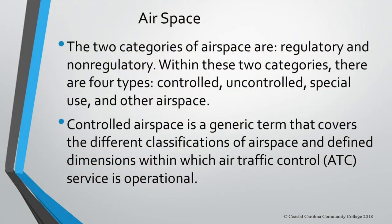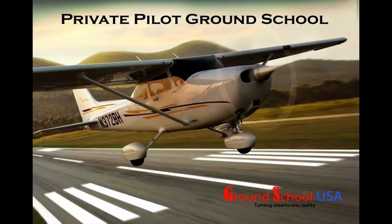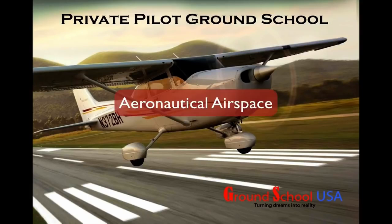Let's talk about airspace. There are two categories: regulatory and non-regulatory. Within these two categories there are four types: controlled, uncontrolled, special use, and other. Controlled airspace is a generic term that covers the different classifications of airspace and defines dimensions within which air traffic control service is operational. In this session we're going to look at the complex system of aeronautical airspace in the USA.